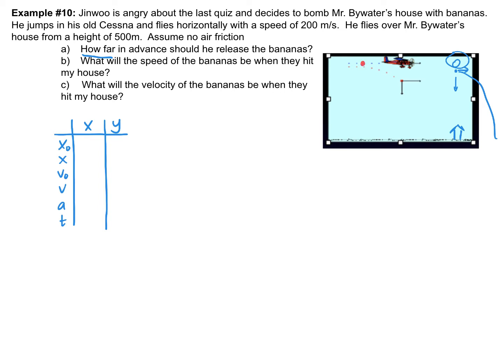We're going to assume that our starting point has zero horizontal displacement. The final horizontal displacement is actually what we're looking for — we need to know how far horizontally in advance to drop the bananas. We know the initial velocity is 200 meters per second. The final velocity is also 200, because horizontally it continues to move at that 200 meters per second. That means the acceleration is zero, and of course we don't know the time.